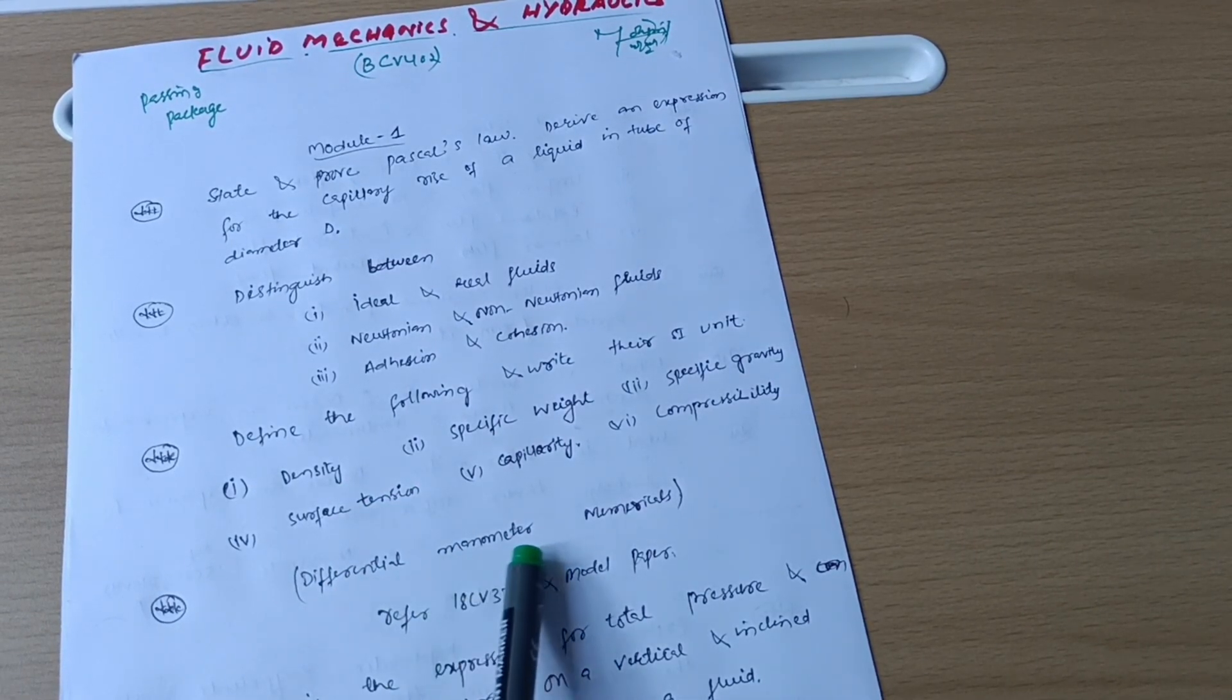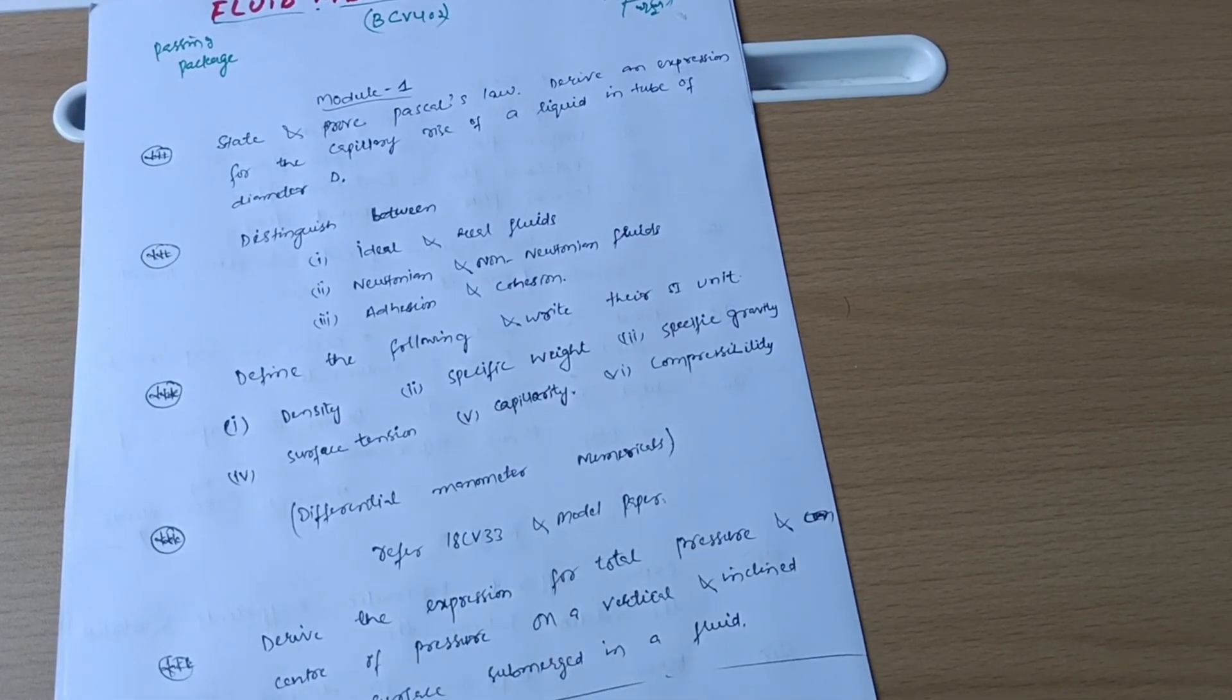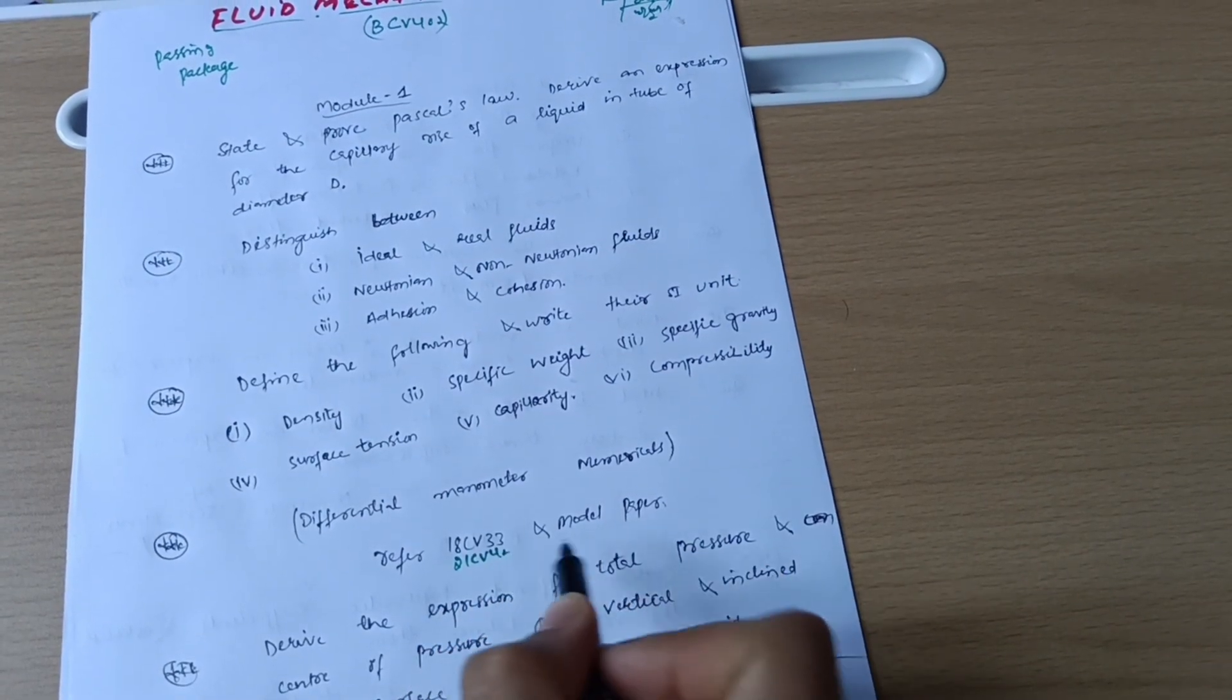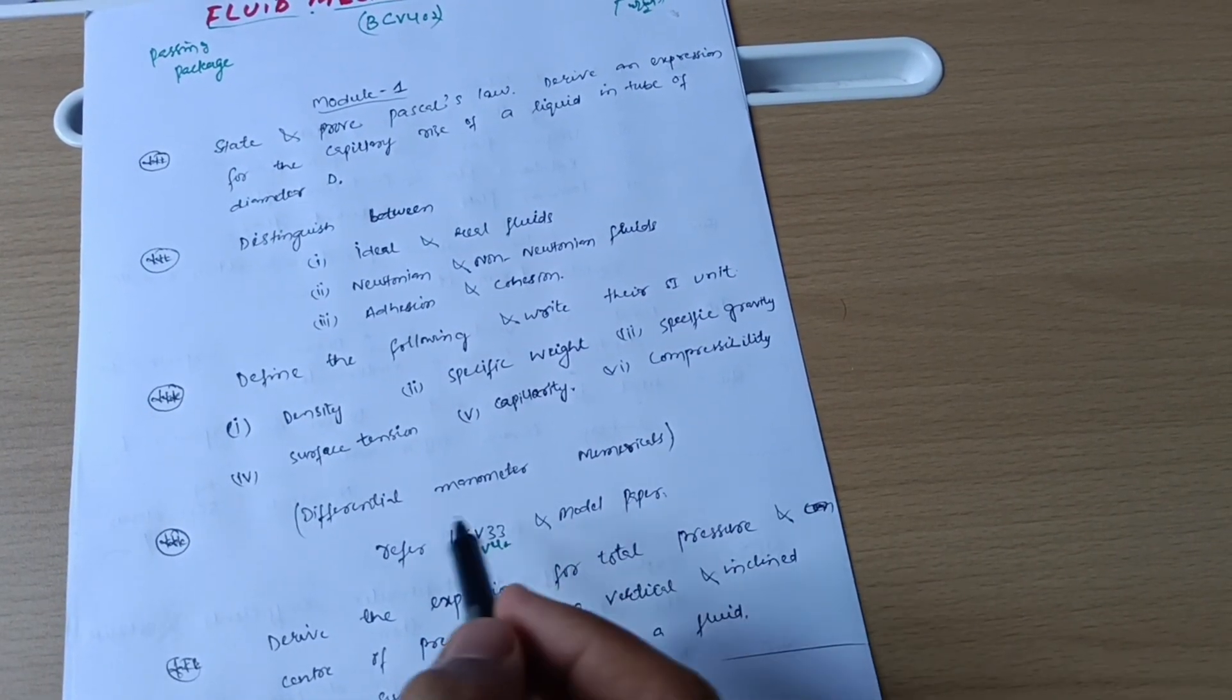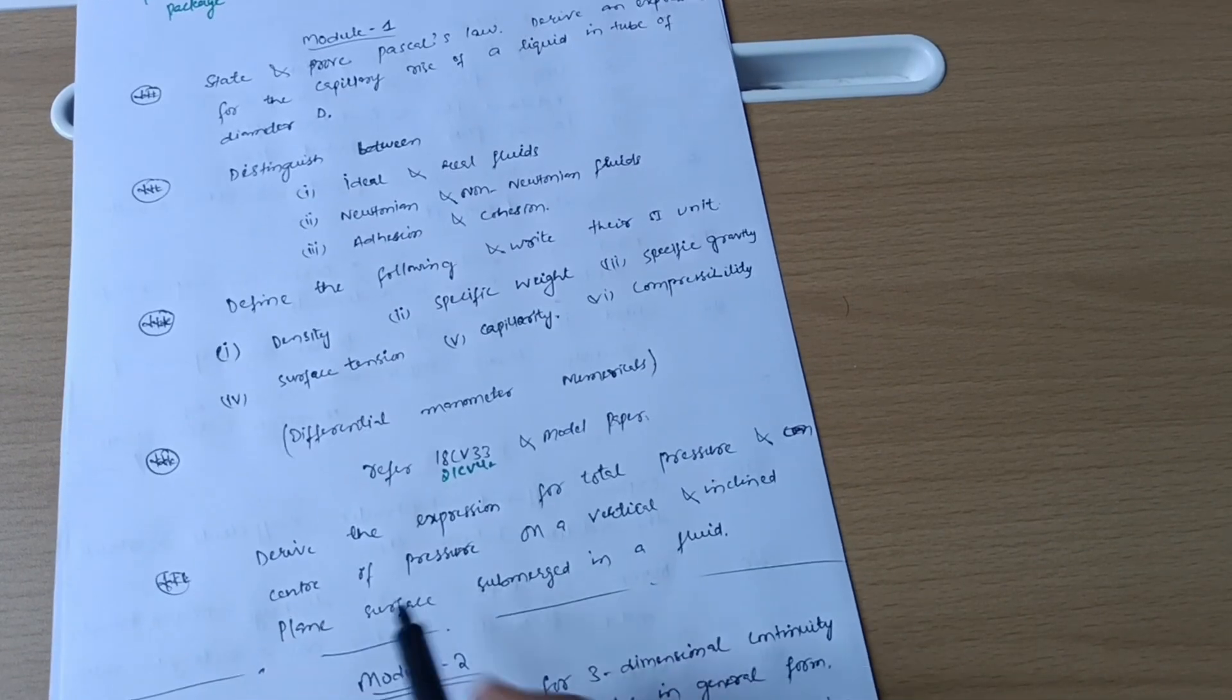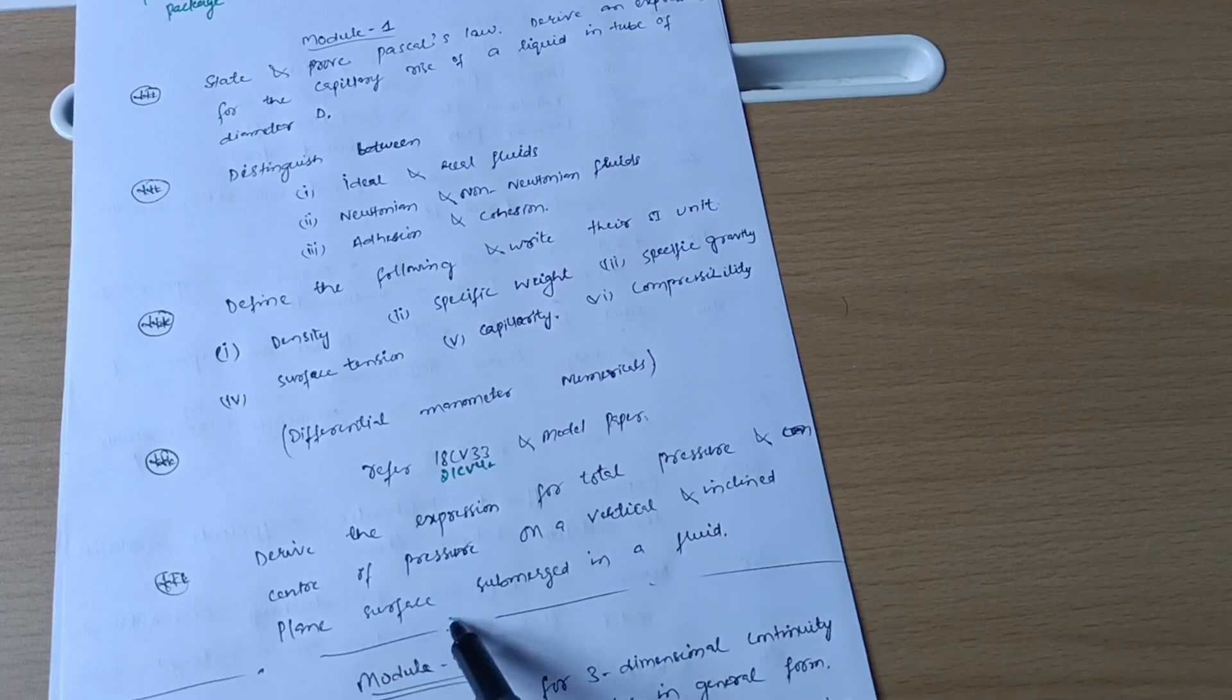Next is problems on differential manometer. For that you have to refer the papers 18CV33 and also you can refer 21CV42 paper and model question papers also if you want to cover the numericals on differential manometer. Next is derive the expression for total pressure and center of pressure on a vertical and inclined plane surface submerged in a liquid. So this much is enough to cover Model 1.